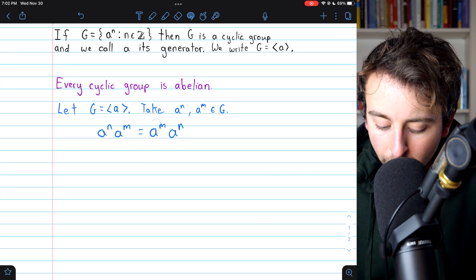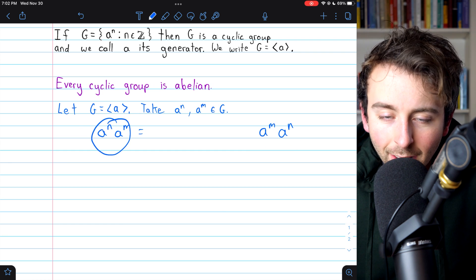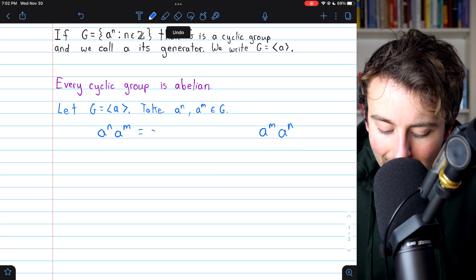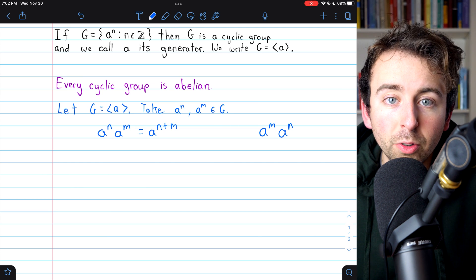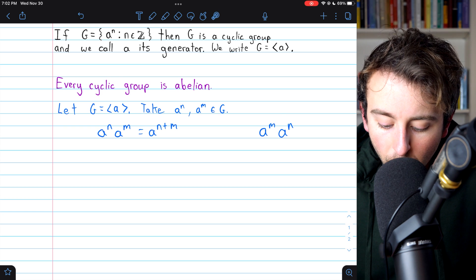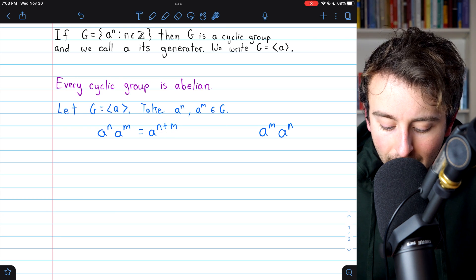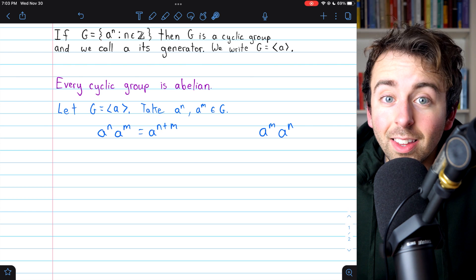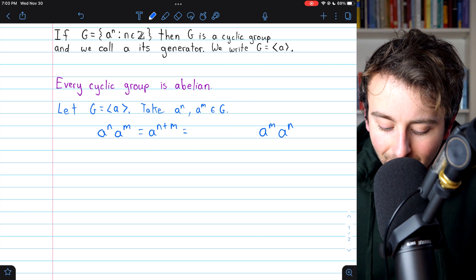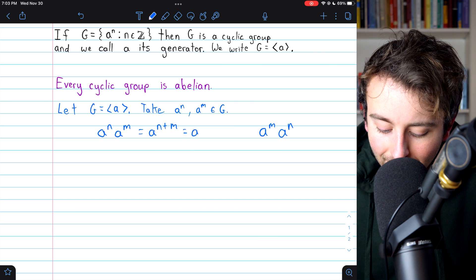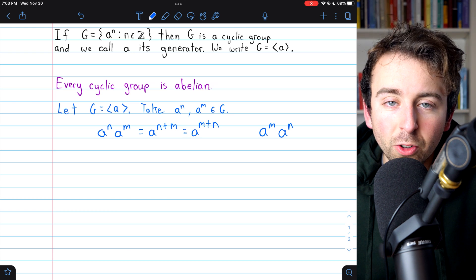And this is fairly straightforward just using our exponent rules. A to the N times A to the M is A to the N plus M. That's how exponents work. But we know that addition is commutative. That's something we know. So N plus M is the same as M plus N, which is to say I can rewrite this as A to the M plus N. Certainly the order of addition doesn't matter.